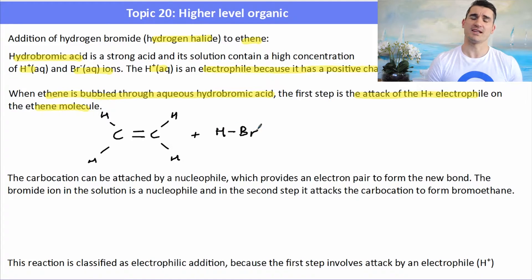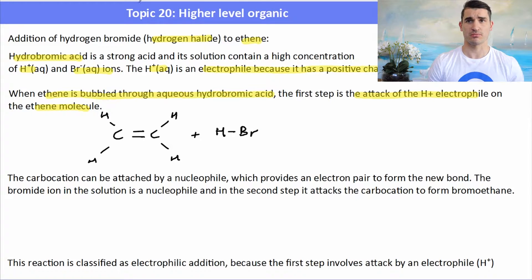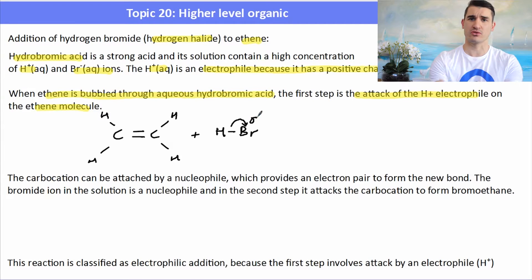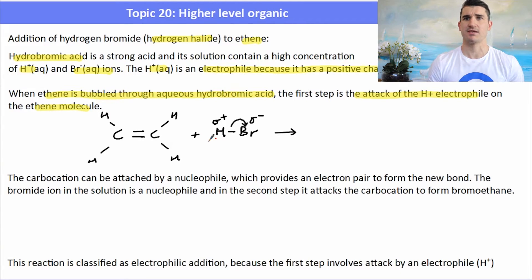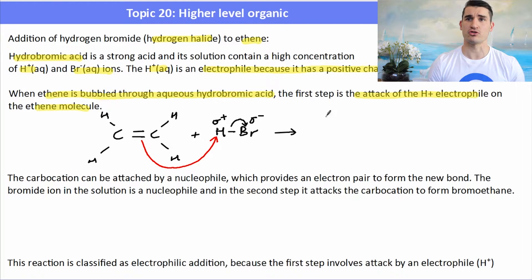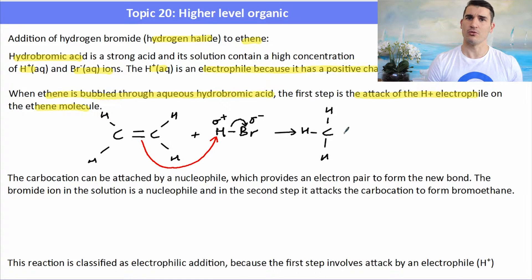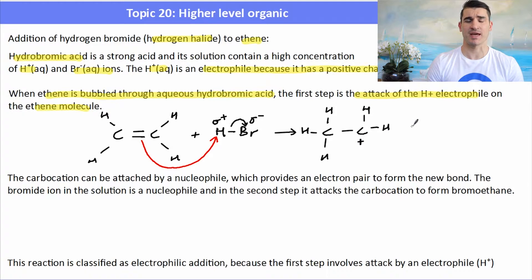H⁺ is formed from the heterolytic fission of the bond in hydrogen bromide. The bromine takes the electrons so it becomes negatively charged; the hydrogen loses the electrons so it becomes positively charged and becomes an electrophile. As the electrophile gets close to the region of high electron density, it accepts an electron. We draw the arrows going from the carbon-to-carbon double bond to the hydrogen ion. That causes breaking of the double bond, forming a single carbon-to-carbon bond with a positive charge — that is known as a carbocation intermediate.